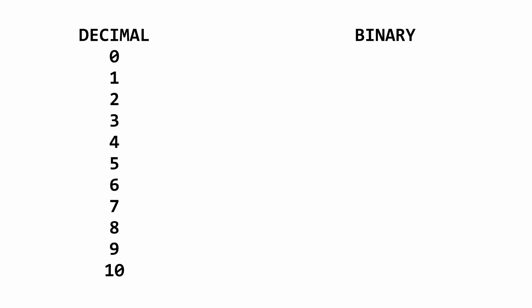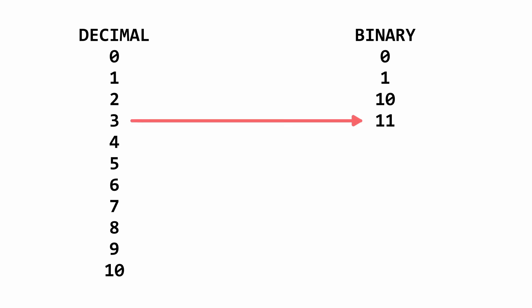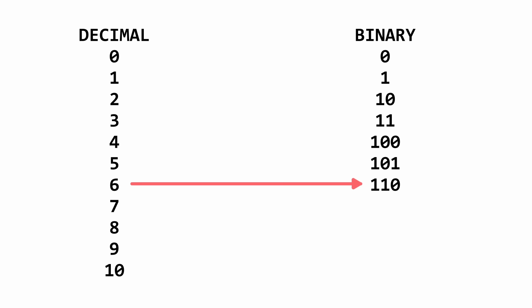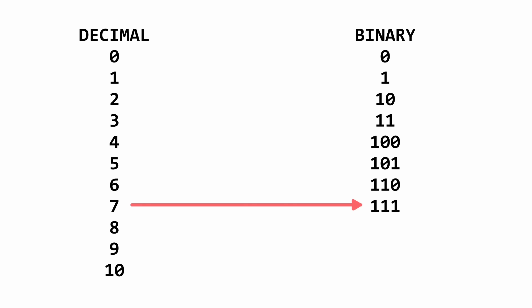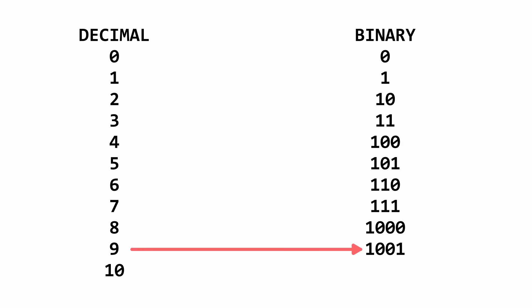The problem is that decimal doesn't convert very cleanly to binary. Because if you want to represent the number 7, you only need 3 binary bits to get there: 1, 1, 1. But if you want to represent the number 9, you need 4 binary bits to get there. This is inconvenient. So we can solve this using something called octal.